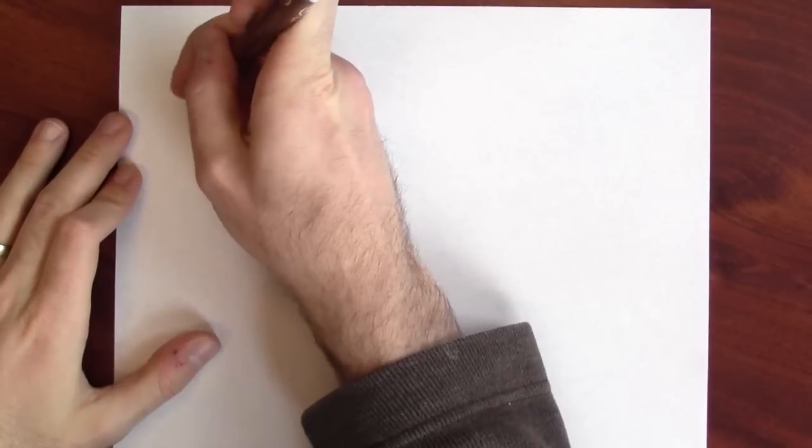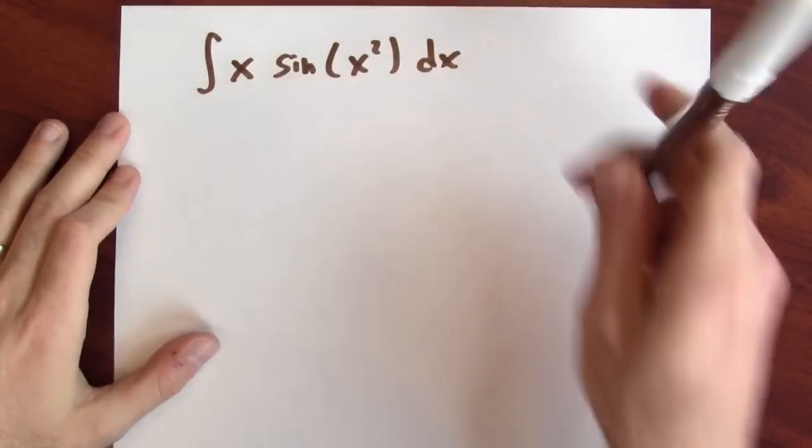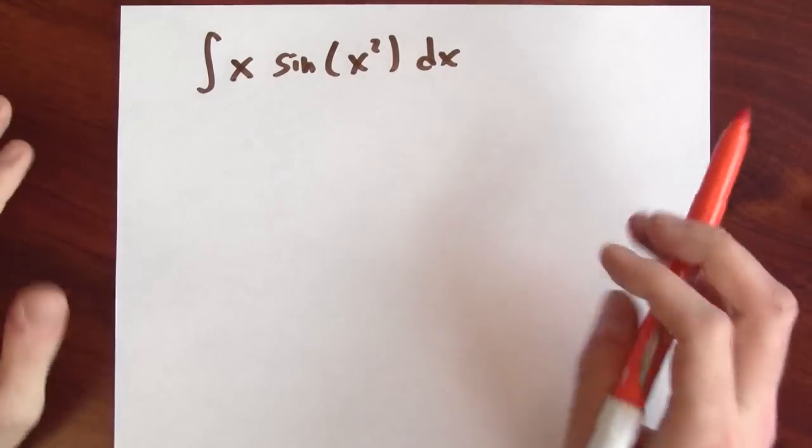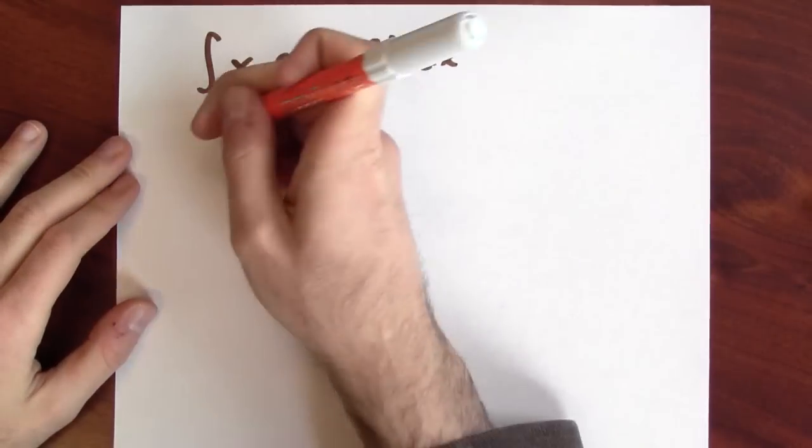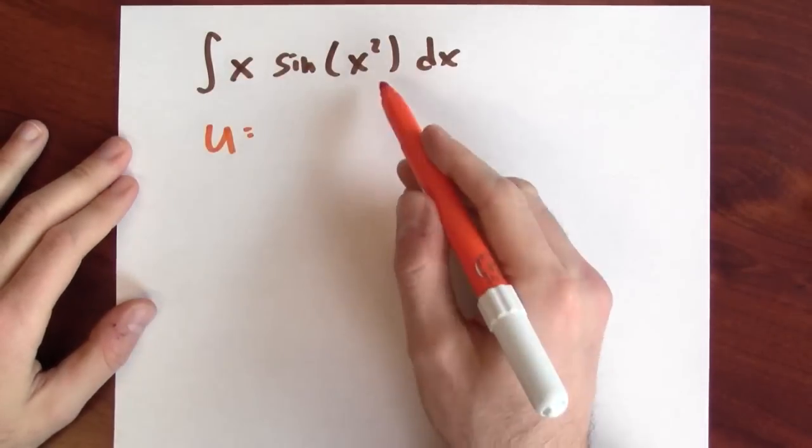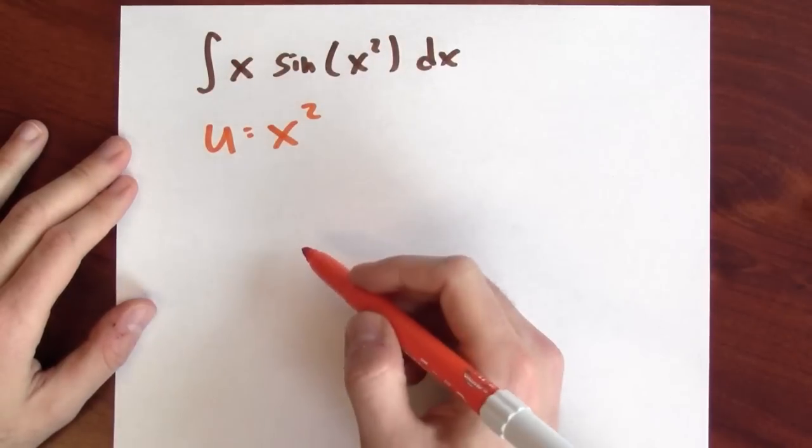This is anyhow all too abstract. Let's just see this in action. So I'm trying to anti-differentiate x times sine of x squared dx. And the trick here is to give a name to the inside function in the chain rule. I'm going to call that u. And I want the inside function to be x squared. So I'll say that u is x squared.